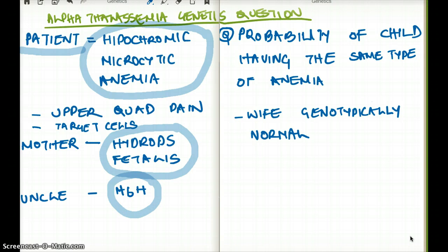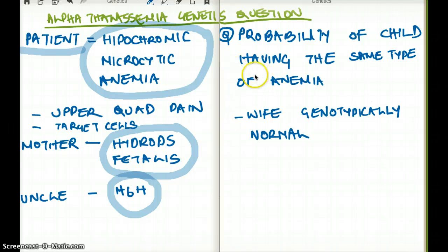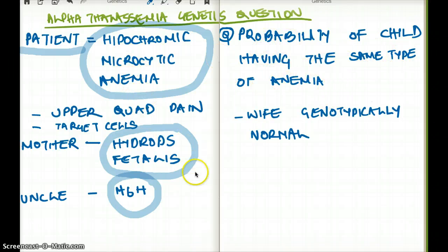This video talks about alpha thalassemia and a genetics question associated with it. A patient comes into the ER with upper quadrant pain. On further analysis, it was found that the patient had hypochromic microcytic anemia along with target cells. The patient's mother had a baby who had hydrops fetalis, and the patient's uncle had HBH disease. The question asks: what is the probability of the child having the same type of anemia as the father, if the patient has a baby with a genotypically normal woman?